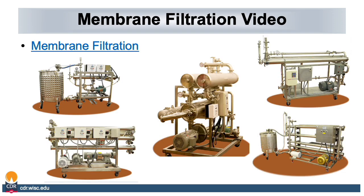At the Center for Dairy Research, we have the capability of using multiple sizes of filtration. We can do MF, UF, NF, and RO with all of these pieces of equipment. In some of the pictures, you can see how our batch loops are set up with a batch tank that goes through the membrane filtration system. If you also refer to the equipment video section of this short course, you will be able to watch videos on the internal workings of a membrane filtration system.